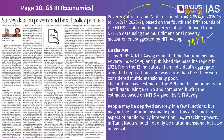The NITI Aayog, which publishes the Multi-Dimensional Poverty Index, bases this index on data given by the National Family Health Survey number 4. This index talks about 12 indicators, and an average score is given for all these indicators. As per the survey, if a person's deprivation score is 0.33 or higher, then the person is considered multi-dimensionally poor.